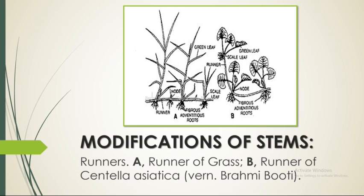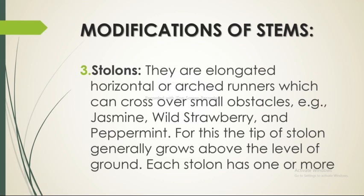In figure A, this is the runner of grass, which includes green leaves, scale leaves, nodes, runners, and fibrous adventitious roots. In figure B, this is the runner of Centella asiatica (vernacular name Brahmi booti), which includes the green leaf, scale leaf, node, and fibrous adventitious roots, as shown in the figure.